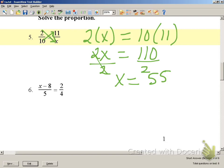Number 6 will be the same way. We're going to cross multiply. So we're going to say 4 times that quantity of X minus 8. So 4 times the quantity X minus 8 is equal to 5 times 2.